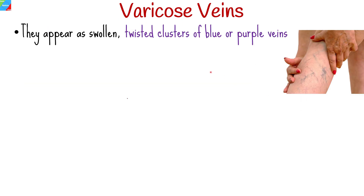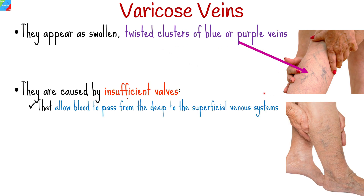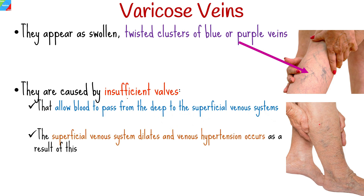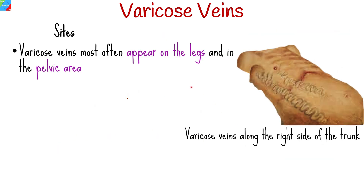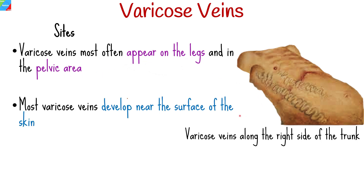They may appear as swollen, twisted clusters of blue or purple veins. They are caused by insufficient valves that allow blood to pass from the deep to the superficial venous systems. The superficial venous system dilates and venous hypertension occurs as a result of this. Varicose veins can appear anywhere, but most often appear on the legs and in the pelvic area. Most varicose veins develop near the surface of the skin.